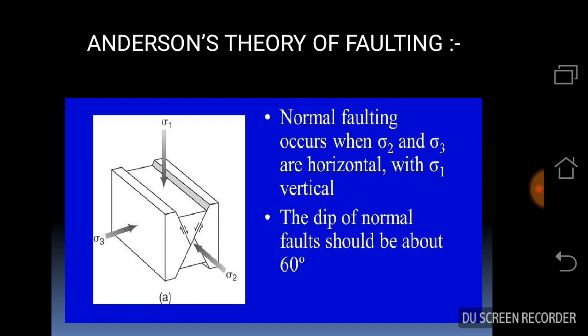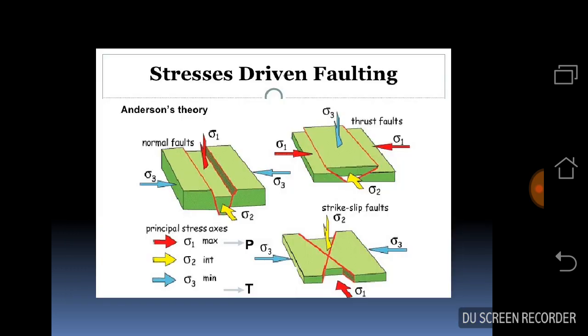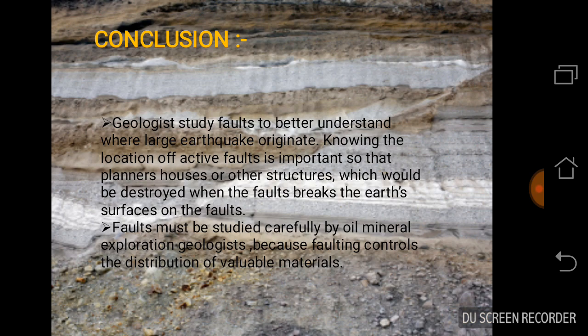These three types of faults are recognized depending on whether the tensile stress (sigma 1), the compressive stress (sigma 3), or the intermediate stress (sigma 2) is vertical. Normal faulting occurs when sigma 2 and sigma 3 are horizontal with sigma 1 vertical, and the dip of normal faults should be about 60 degrees. Now come to the conclusion.